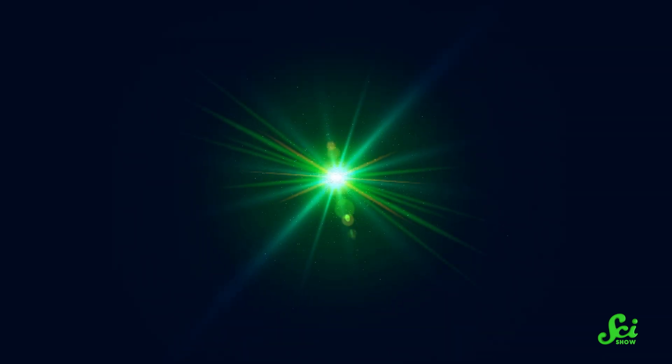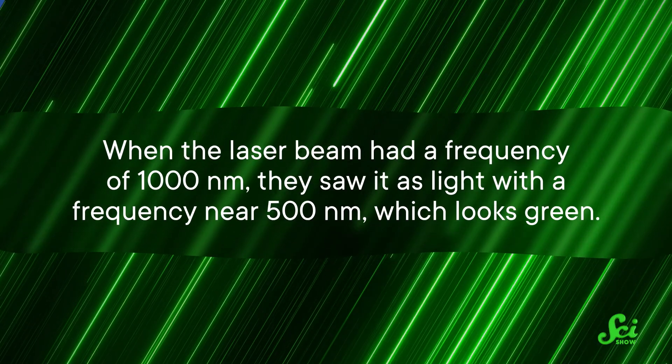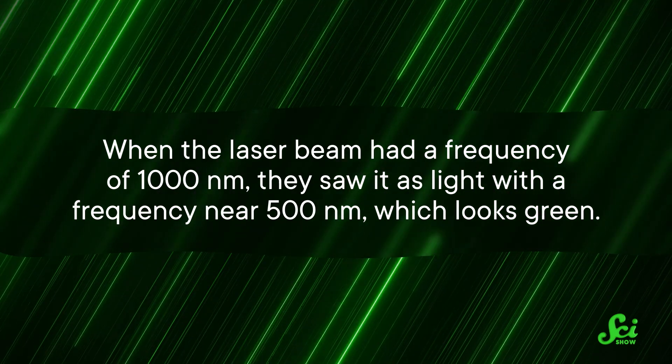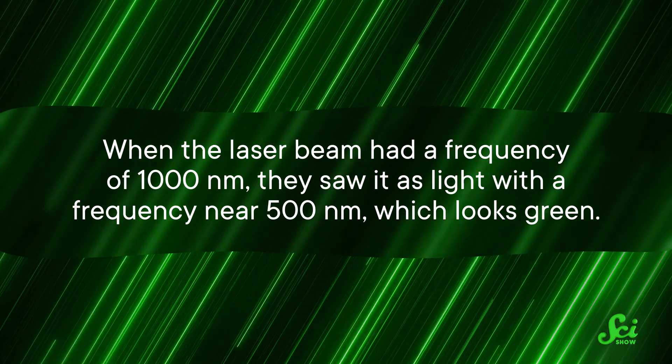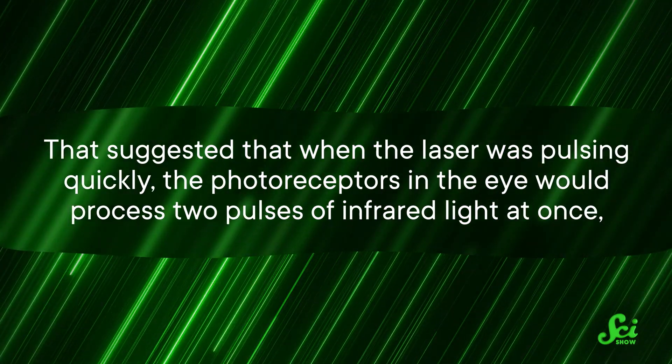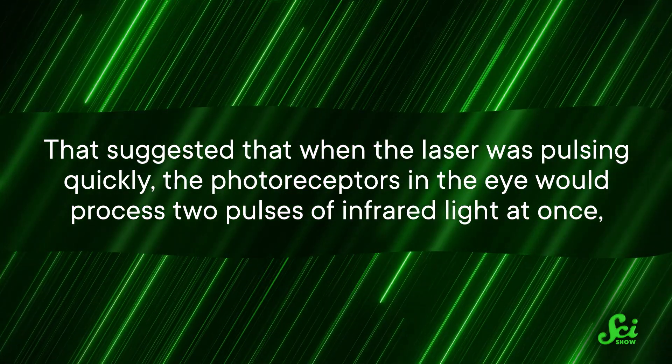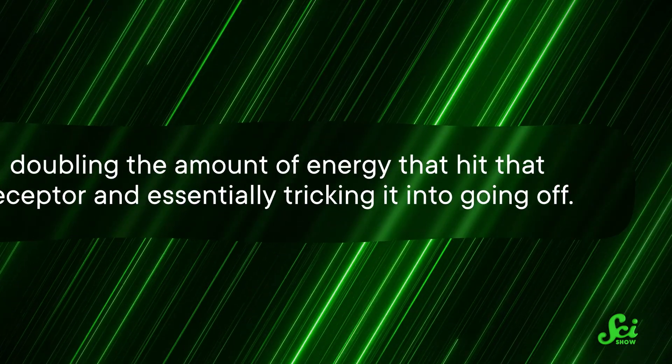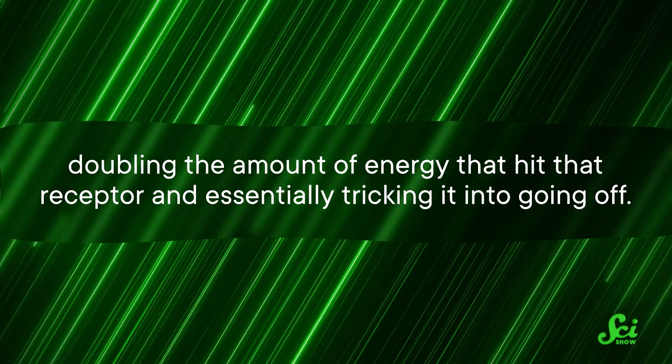In 2014, a group of scientists who had been seeing green flashes while working with an infrared laser decided to get to the bottom of what was going on. To do that, they shined pulses of infrared laser light into volunteers' eyes, and all of them were able to detect a visible light signal. But the weird thing about it was that the color they saw corresponded with a wave frequency that was about double the frequency of the laser. So when the laser beam had a frequency of 1000 nanometers, they saw it as light with a frequency near 500 nanometers, which looks green. That suggested that when the laser was pulsing quickly, the photoreceptors in the eye would process two pulses of infrared light at once, doubling the amount of energy that hit that receptor and essentially tricking it into going off. So the secret to becoming visible lies in teamwork, at least for infrared waves.